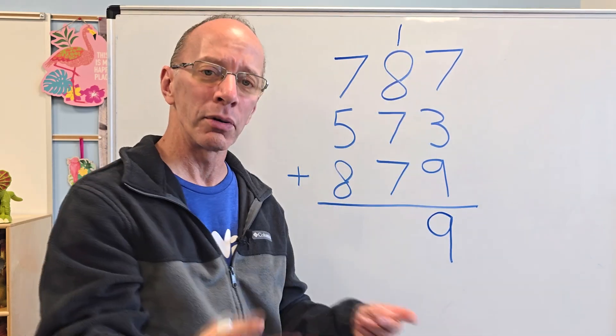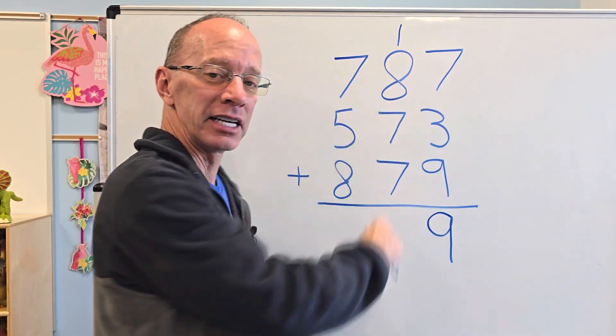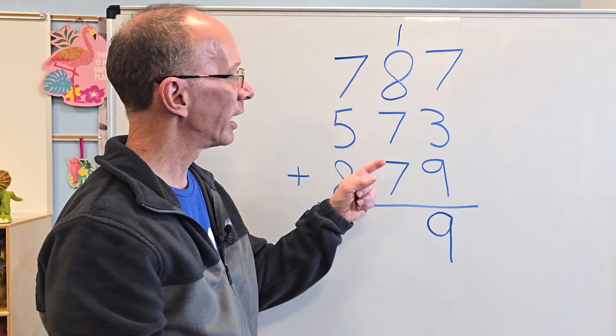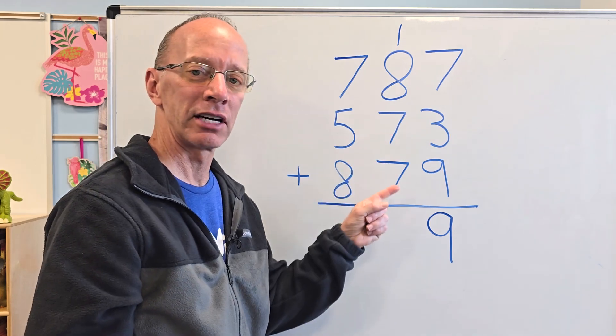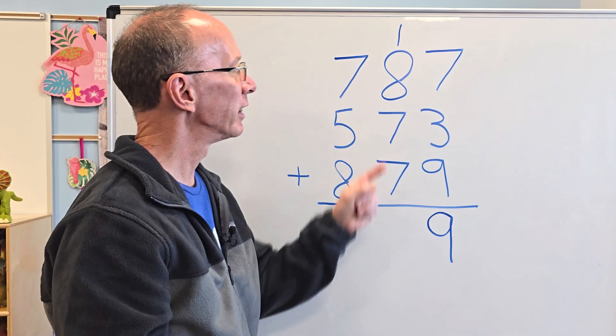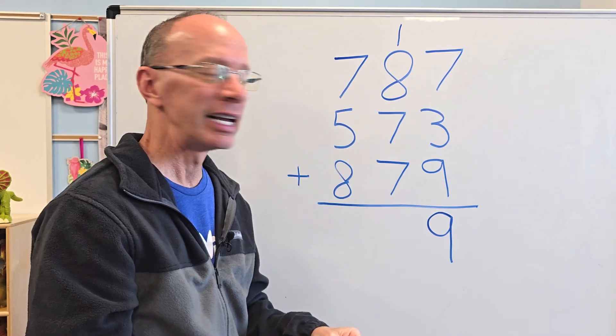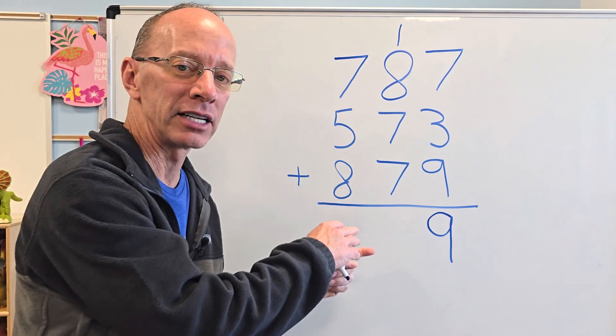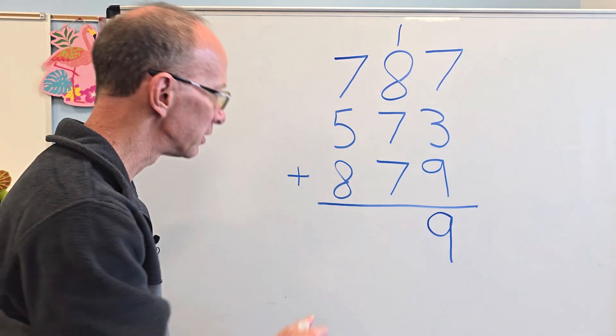And now I start the whole process over adding the tens right now. So I notice I have a double fact. Seven and seven is 14. And then I have eight plus one, which would be nine. And it's okay if you don't know the answer. You need to do a little figuring over to the side.